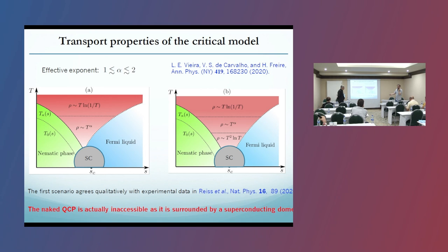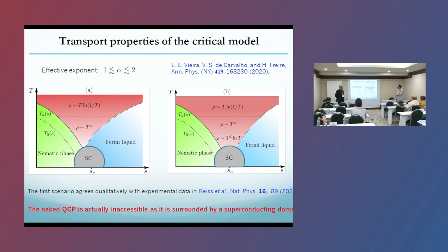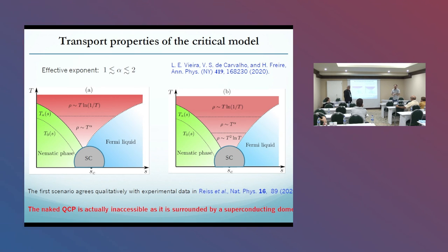Well, it depends on some energy scales. It depends on the nematoelastic coupling. So these scales depend on the nematoelastic coupling. If we had no nematoelastic coupling, then we would get the T-linear resistivity over the whole quantum critical regime. We can discuss this later.